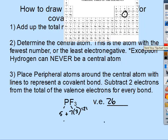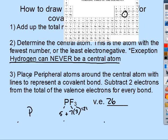Next, figure out who the central atom is — this is the atom with the fewest number or the least electronegative element. Hydrogen can never be the central atom. Here we have one P and three fluorines, so P is going to go in the middle. Then place all the other atoms around the central atom.